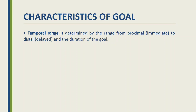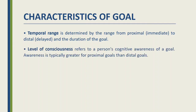Temporal range is determined by the proximal to distal range and the duration of the goal. Level of consequences refers to a person's cognitive awareness of a goal. Awareness is typically greater for proximal goals than distal goals, and awareness plays a very big role in achieving your goal.